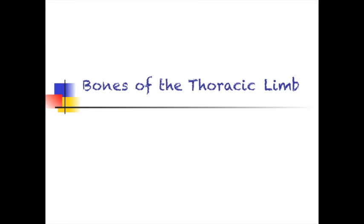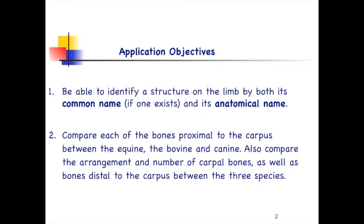Welcome to the thoracic limb. We're going to start out talking about bones. Our objective is to be able to identify the structures on the limb both by its common name and its anatomical name. We're not going to cover all the structures here that you're responsible for, but highlight many of them. Compare each of the bones proximal to the carpus between the equine, bovine, and canine, as well as the arrangement and number of carpal bones and the bones distal to the carpus between the three species.